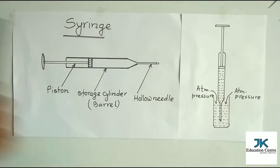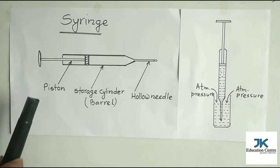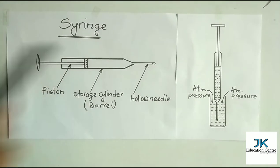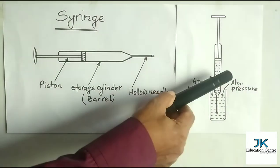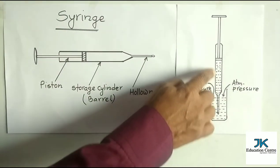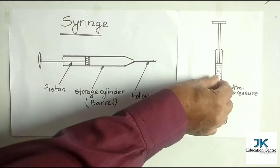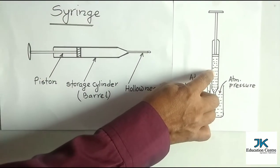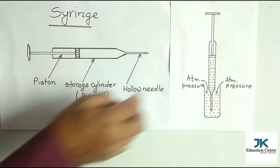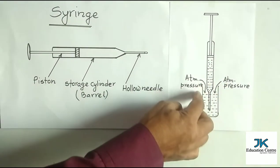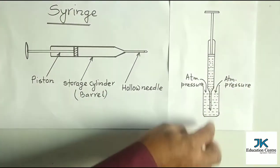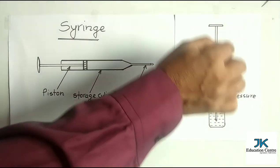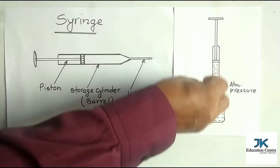Now how does it work? A syringe utilizes atmospheric pressure to pull liquid medicine inside it. The mechanism can be explained with this diagram. When this piston is pulled backward, the region in front of the piston — that is, the storage cylinder — becomes bigger. Volume increases, and increase of volume decreases the pressure inside it. The pressure inside the storage cylinder becomes much less than the atmospheric pressure acting on the surface of the liquid medicine, and because of this high atmospheric pressure, the liquid medicine enters into the space which has low pressure.